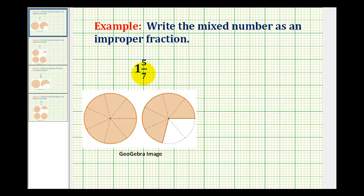We want to write the mixed number one and five-sevenths as an improper fraction. To do this, the denominator stays the same, and then to determine the numerator, we multiply the denominator times the whole number, and then add the numerator.